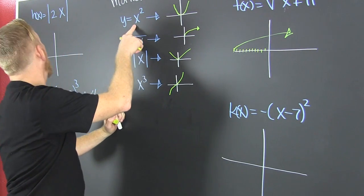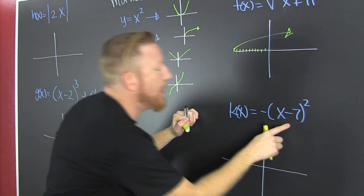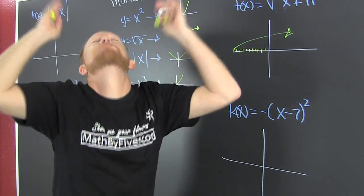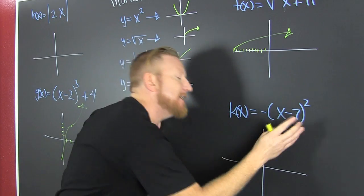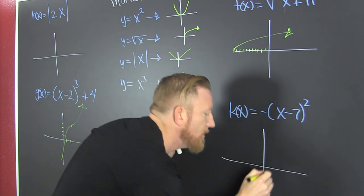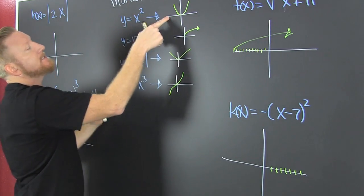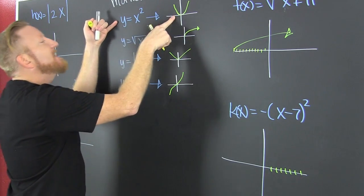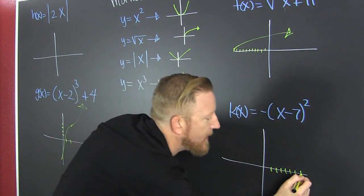Let's do that. This guy - that minus on the outside says flip over the x-axis. That's in the x group, so it goes opposite the way you think. You think left 7? No, right 1, 2, 3, 4, 5, 6, 7. Then I take the square mother function and flip it down.